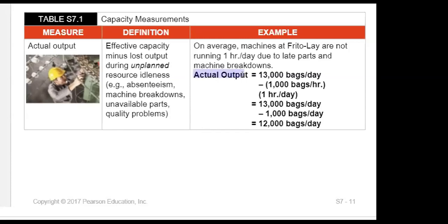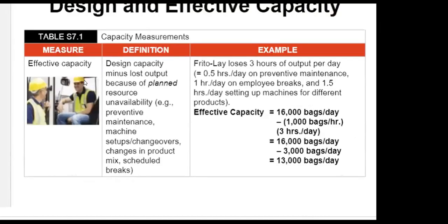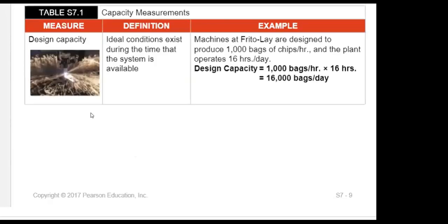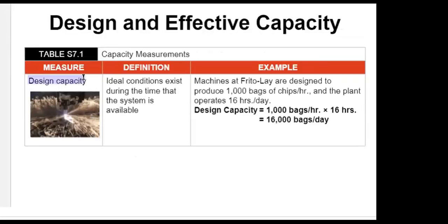For actual output at Frito-Lay: on average, machines are not running one additional hour per day due to late parts and machine breakdowns. If that information is given, we reduce another 1,000 bags, bringing actual output to 12,000 bags per day. We can see how actual output, effective capacity, and design capacity all differ from each other.